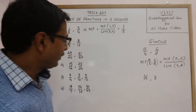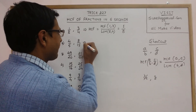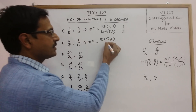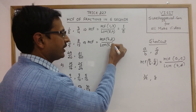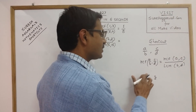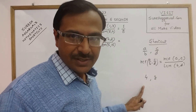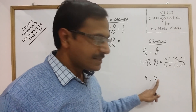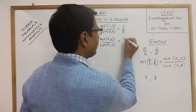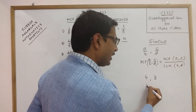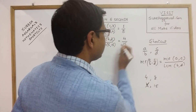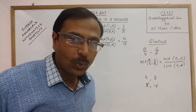Now see this case: HCF will be the HCF of the numerators 4 and 8, over the LCM of the denominators 5 and 15. For 4 and 8, the highest common factor is 4 itself, since 4 divides 8 exactly. And for 5 and 15, since 5 divides 15 exactly, the LCM is 15. So the required HCF is 4/15.